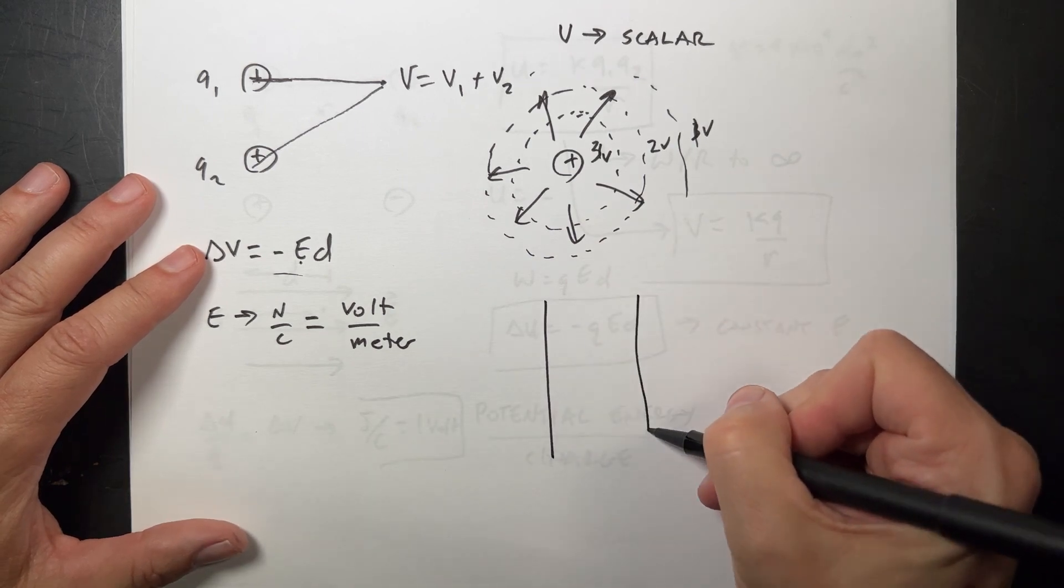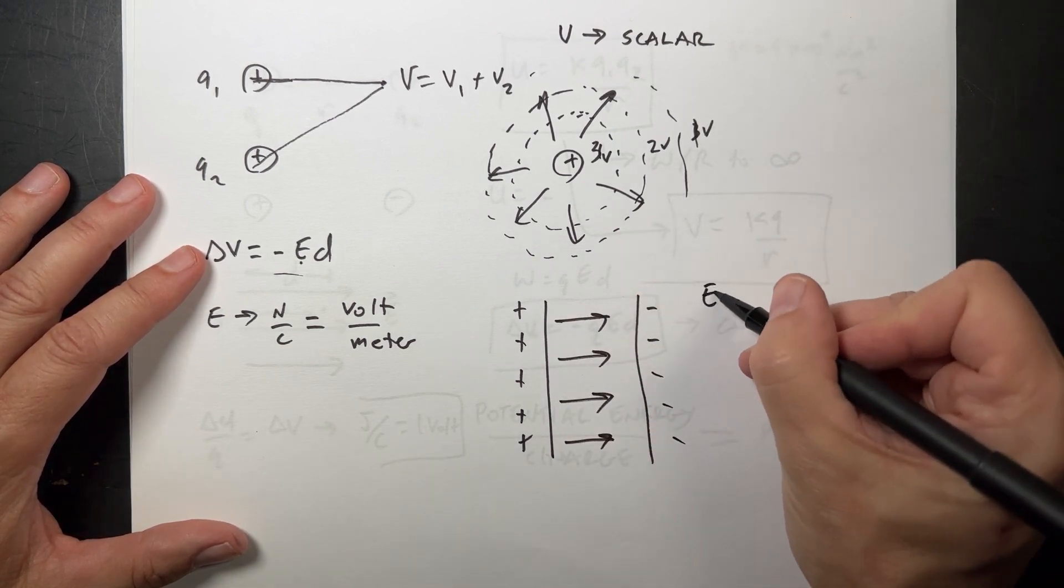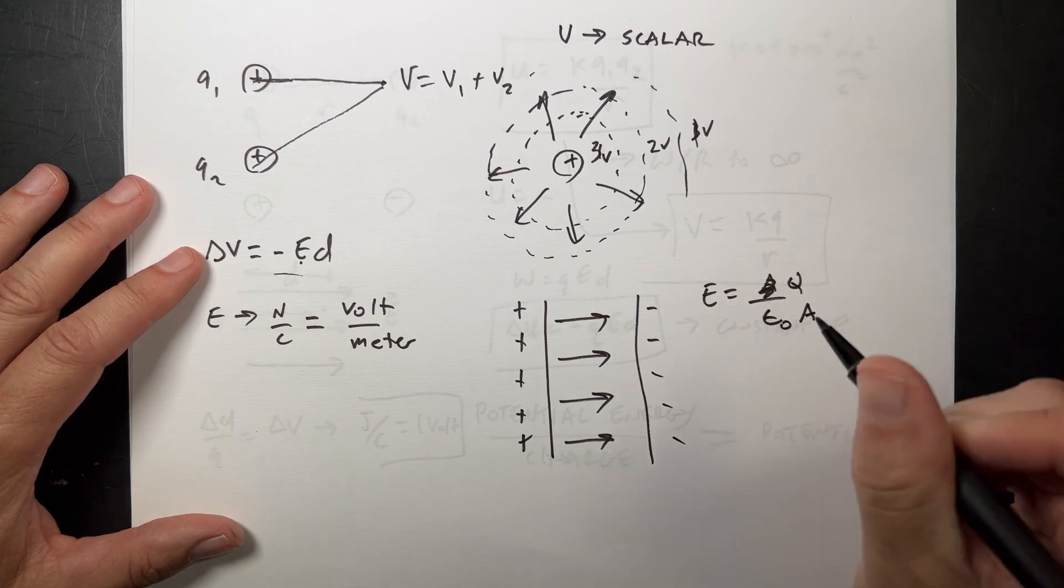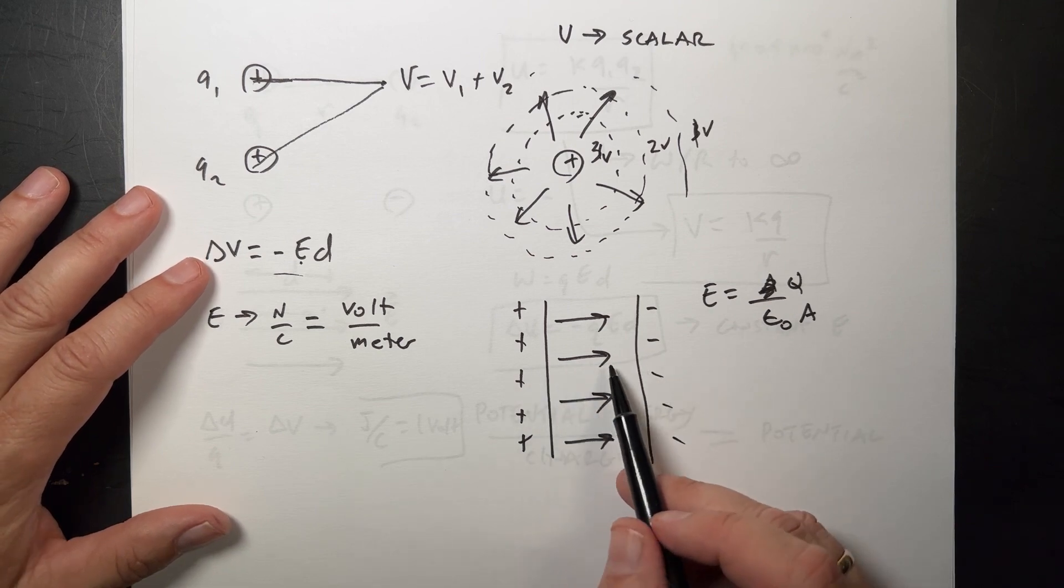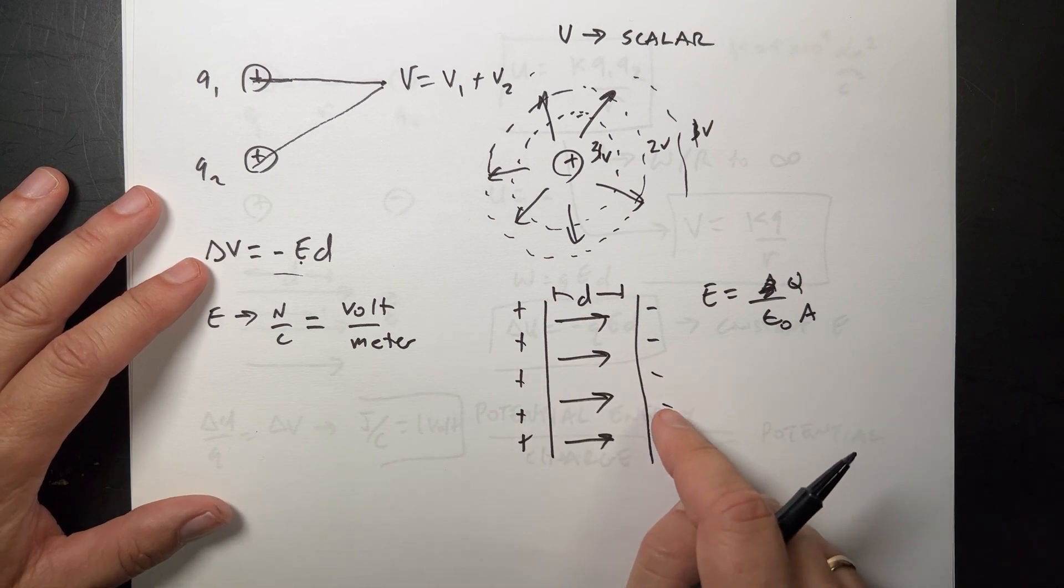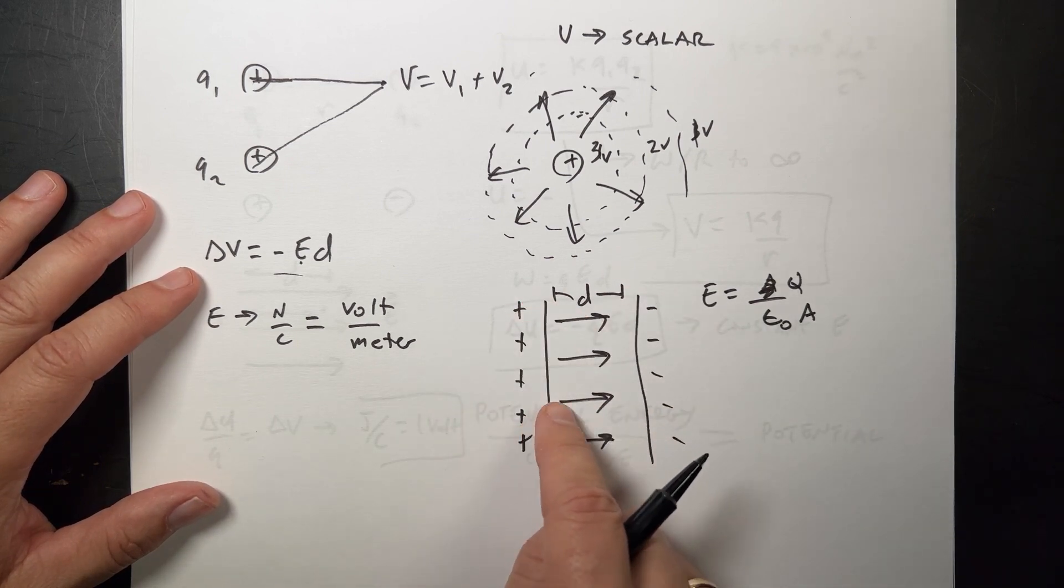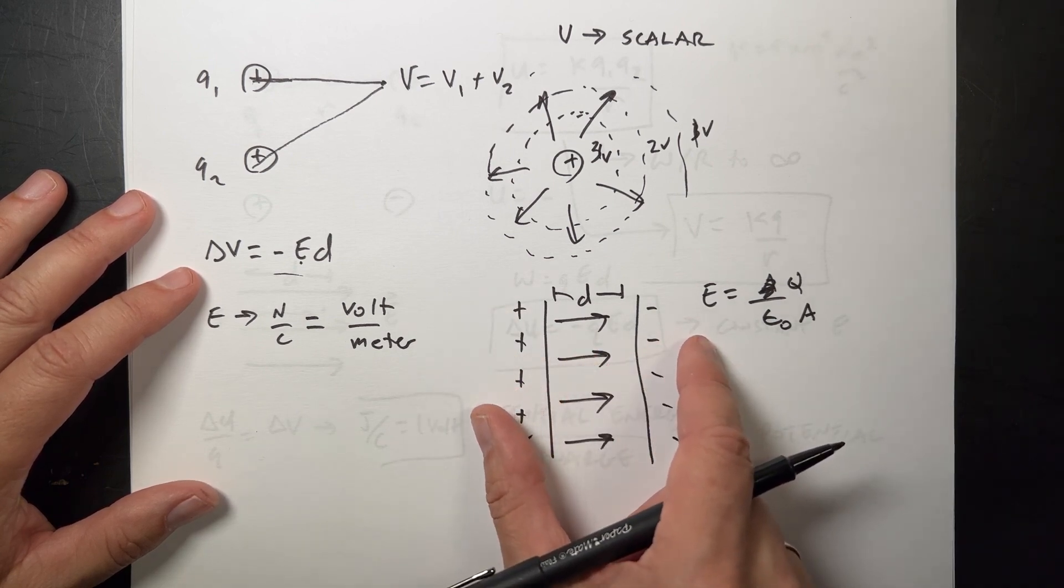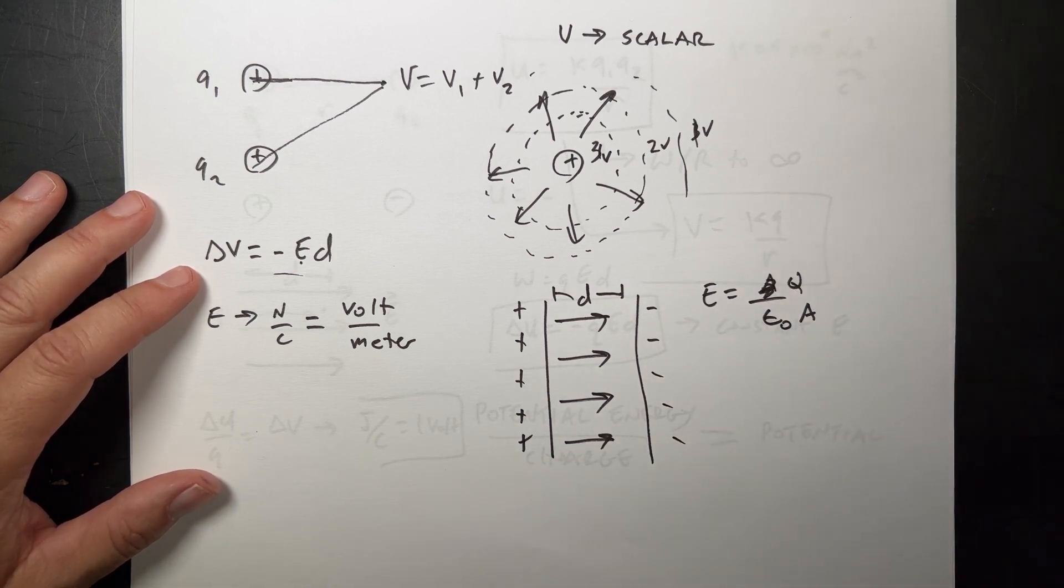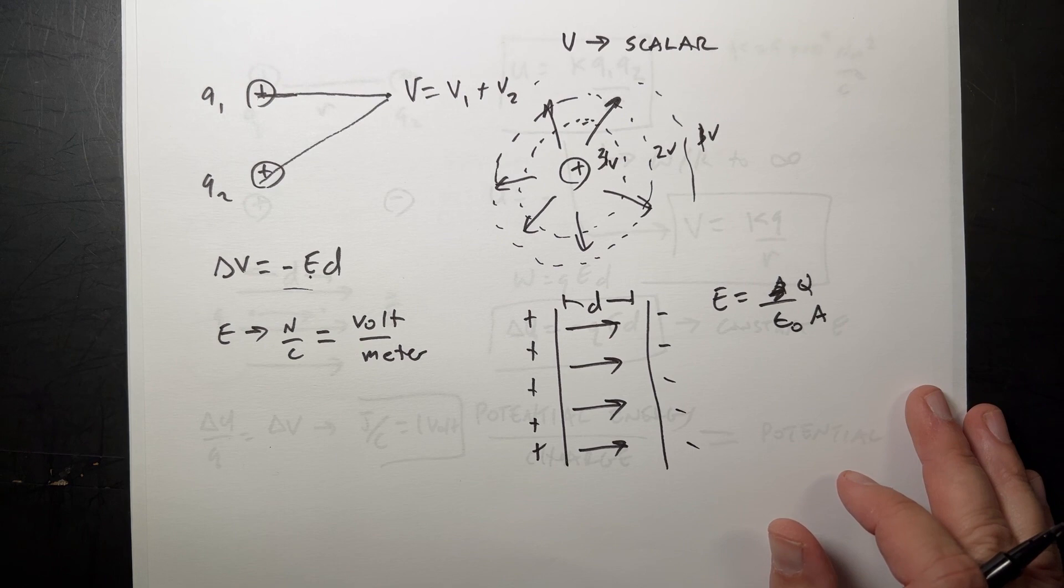We talked about these parallel plate capacitors, right? And the electric field inside of them is constant, E equals Q over epsilon naught A. But what about the potential difference from one side to the other? That does depend on the distance D, right? Because the electric field, if you have to move over a larger distance, it's going to be a larger change in potential going from one side to the other. So we actually can define a property of this, both the size, and if I increase the amount of charge, I increase the field.